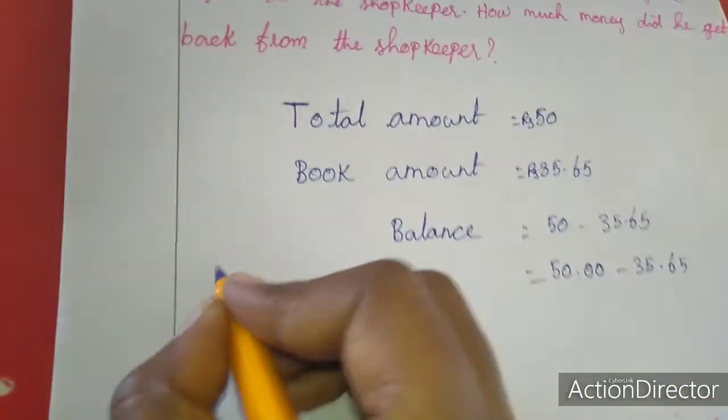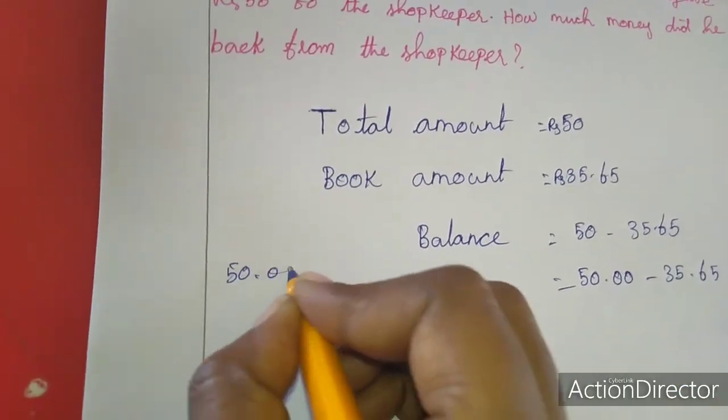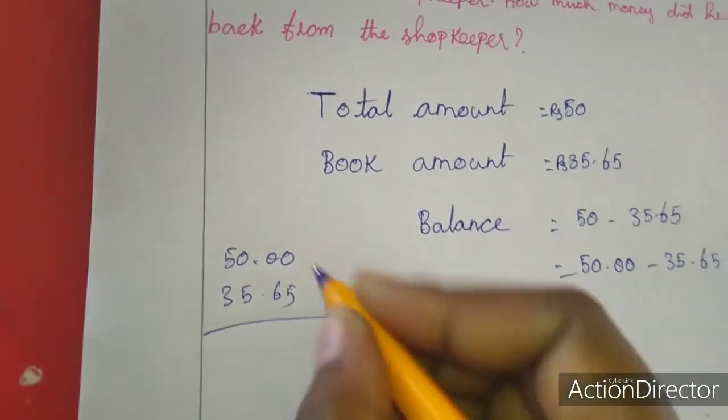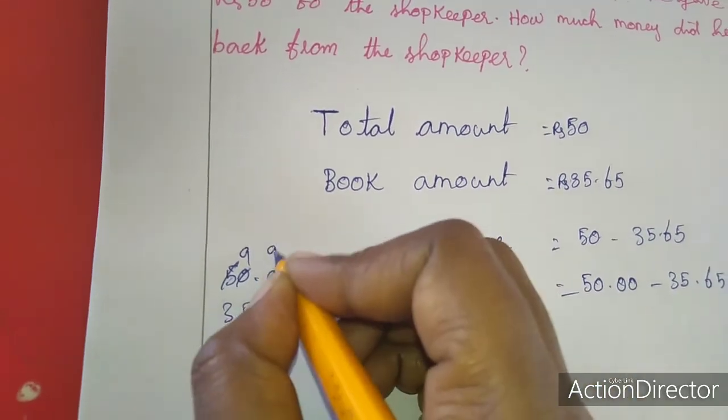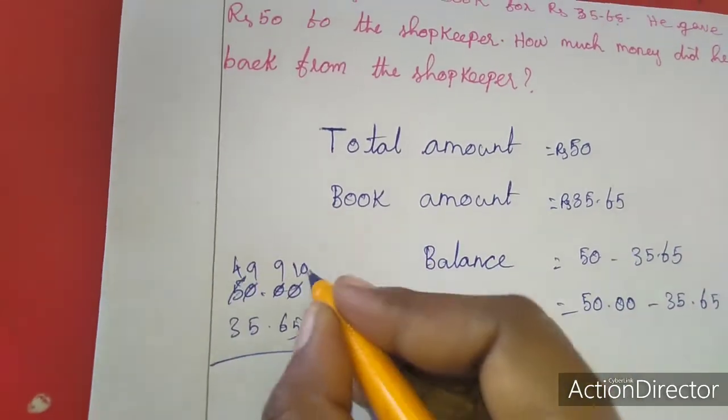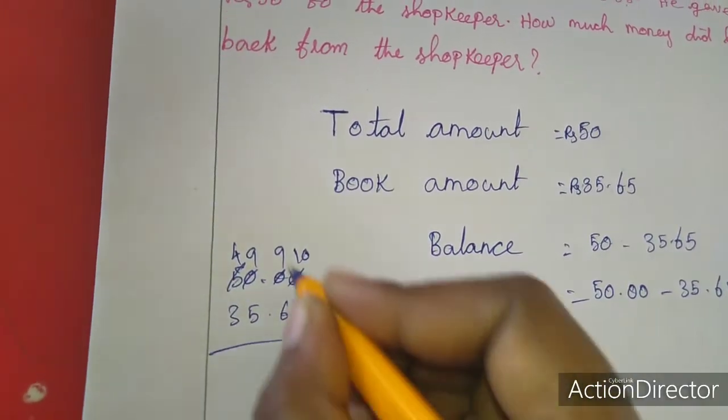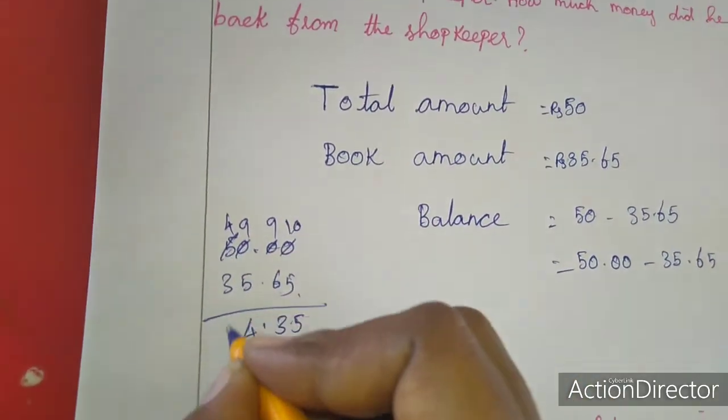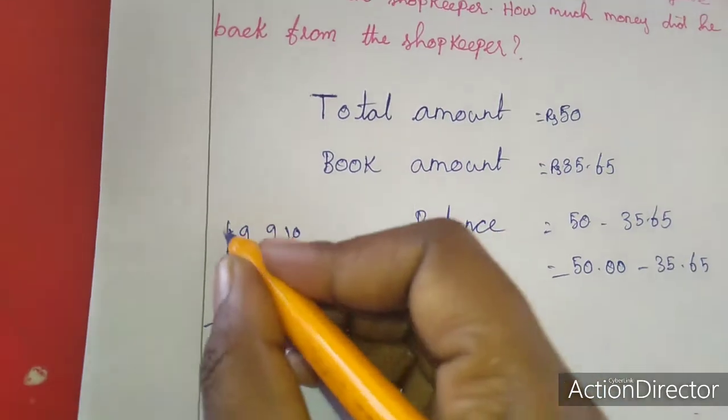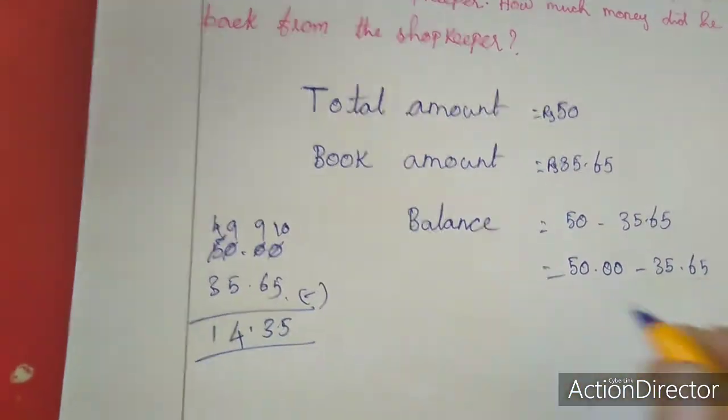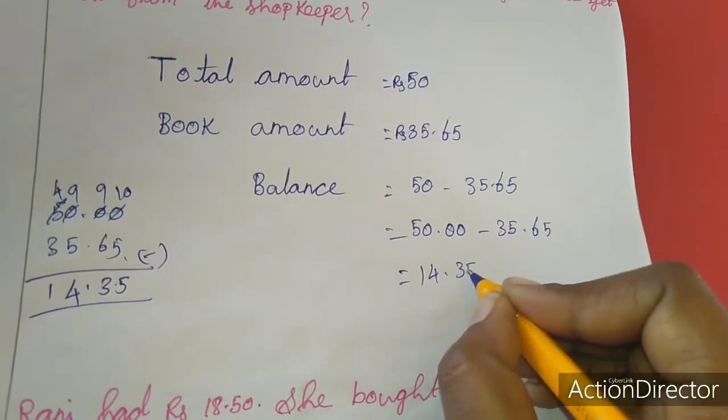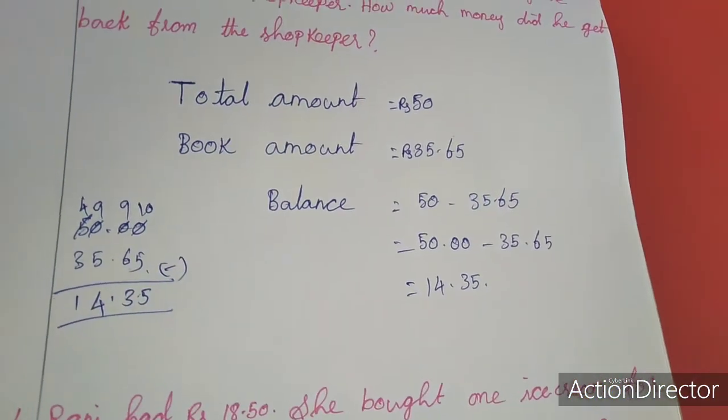I am going to do the subtraction here. 50.00, 35.65. For subtraction I am getting borrowed, so 9, 9, change here 4. So 10 minus 5 is 5, 9 minus 6 is 3, 9 minus 5 is 4, 4 minus 3 is 1. This is the answer. So the balance amount 14.35 he got back. This is the balance amount.